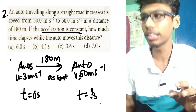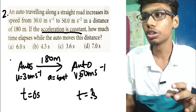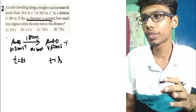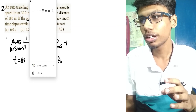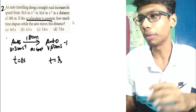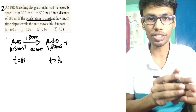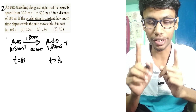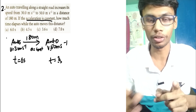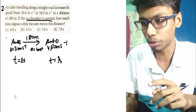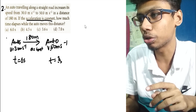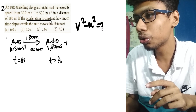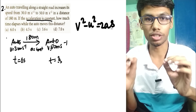So this is the problem. In this case, there is a velocity and a displacement, so we use the equation of motion — the second equation of motion: v² minus u² equals 2as.